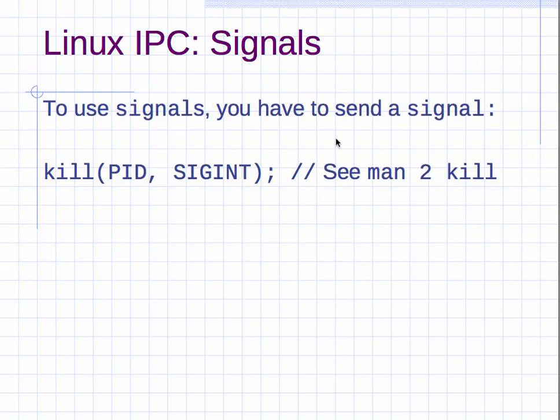To use signals, you can send a signal from a C program using the kill function. This is different—it's the same idea as the kill command, but it's a C function. You identify the process ID of the process you want to send the signal to, and the second argument would be the name of the signal that you want to send. Just like with the kill command where you would say kill -9 to process ID 1025, the same idea.